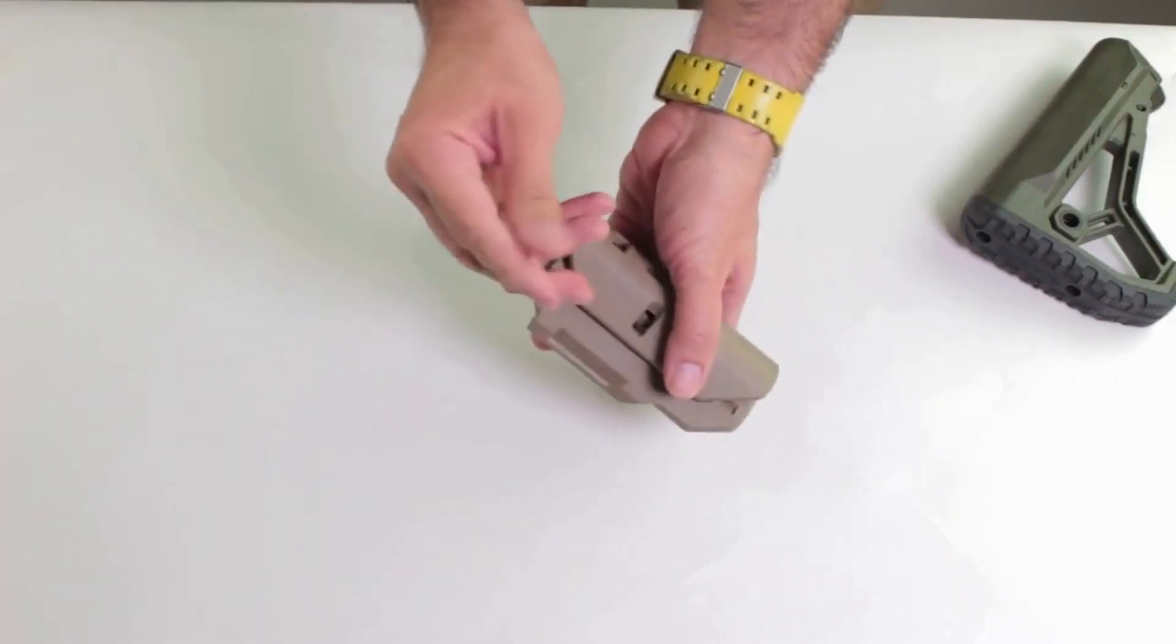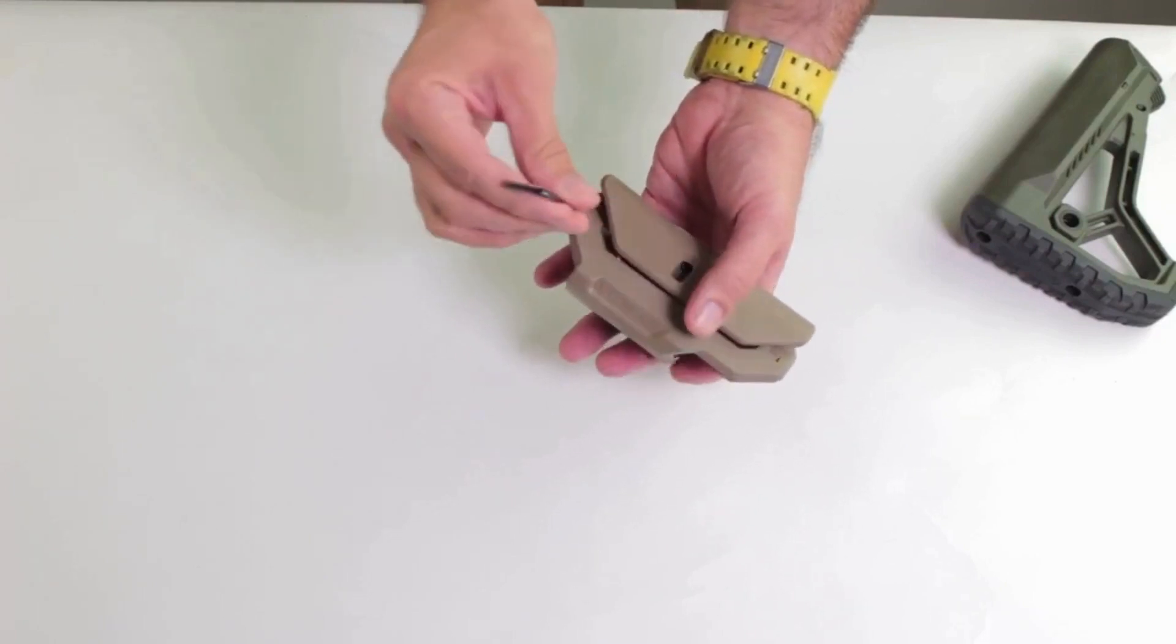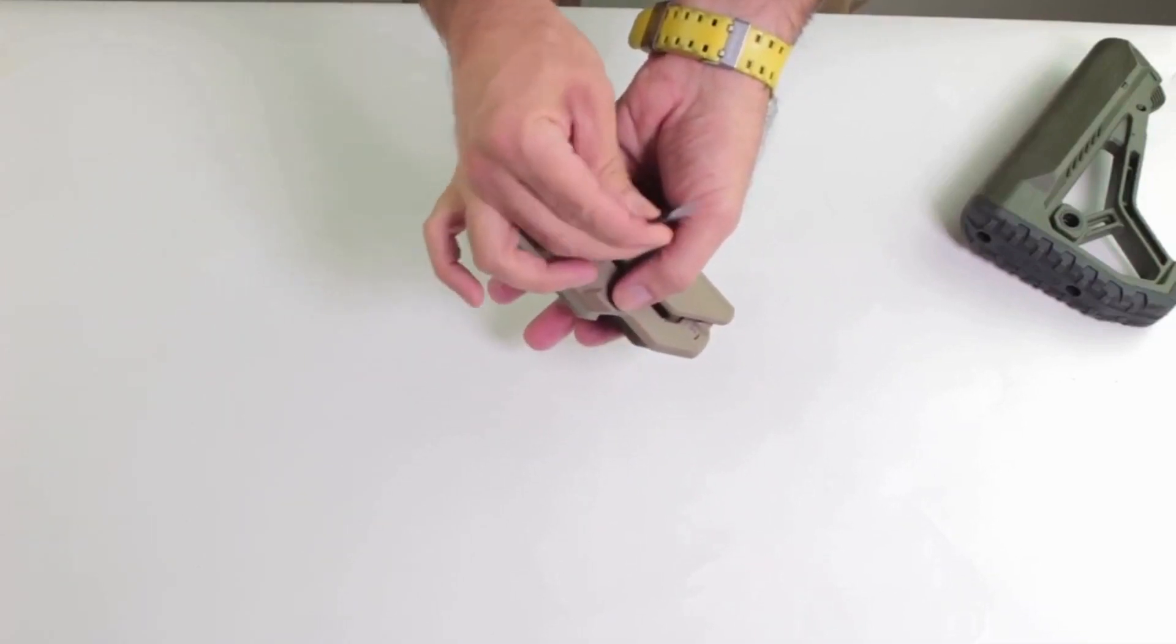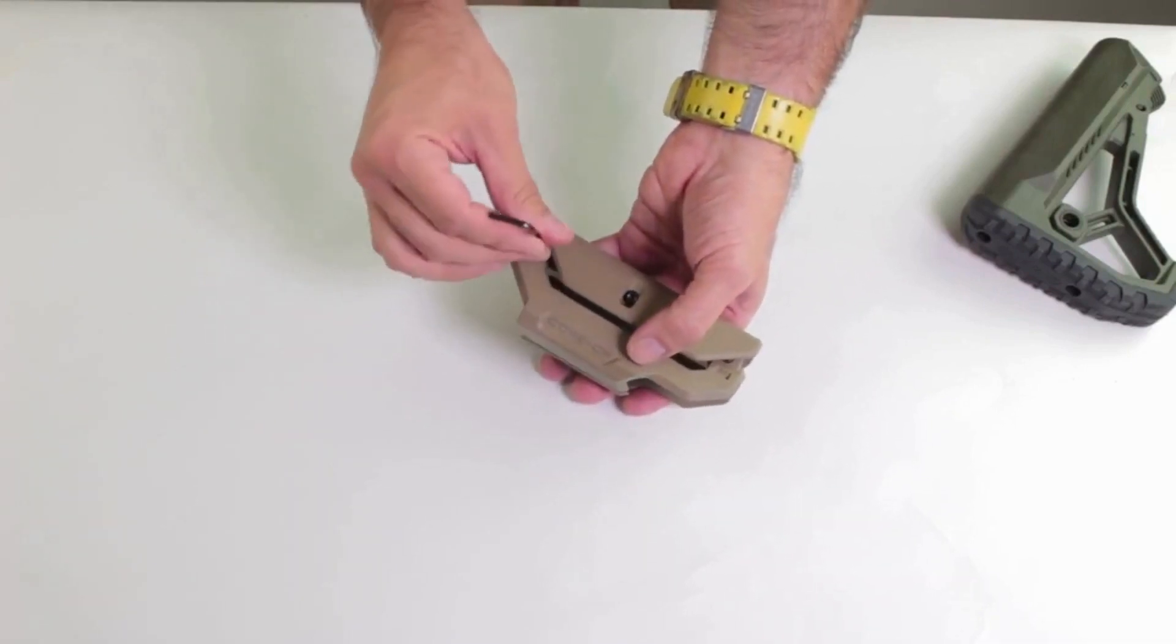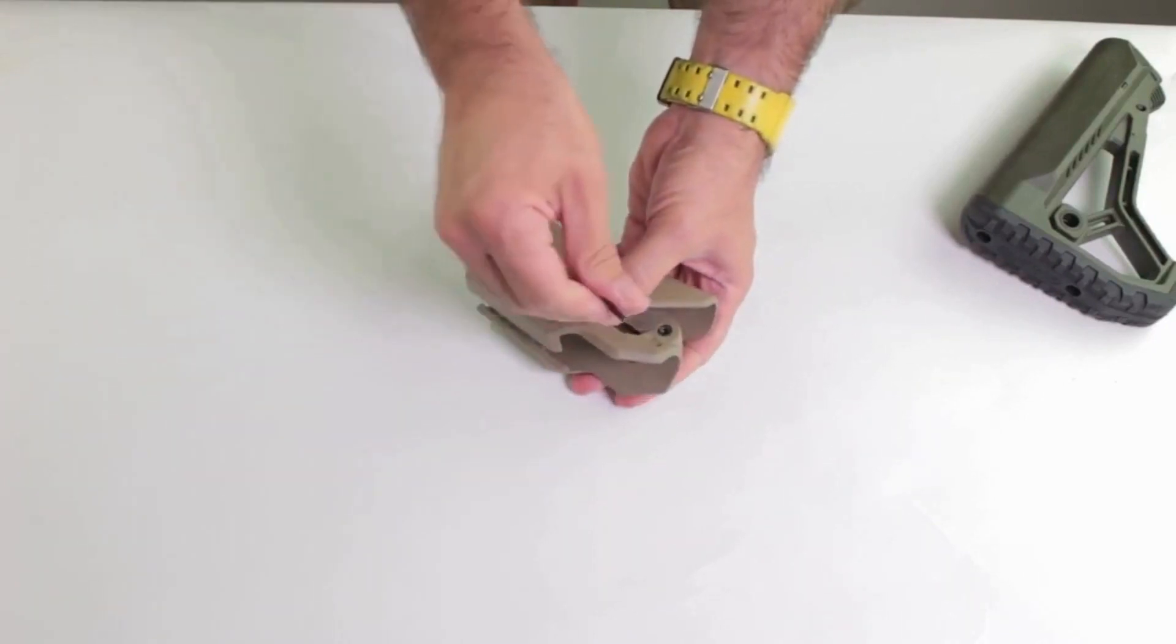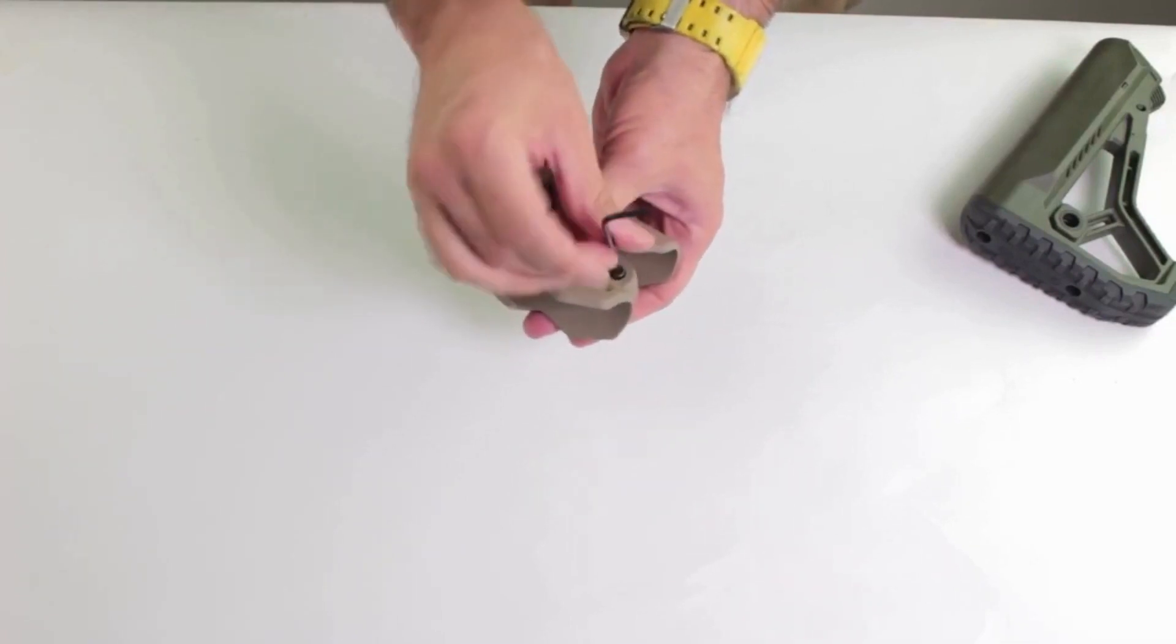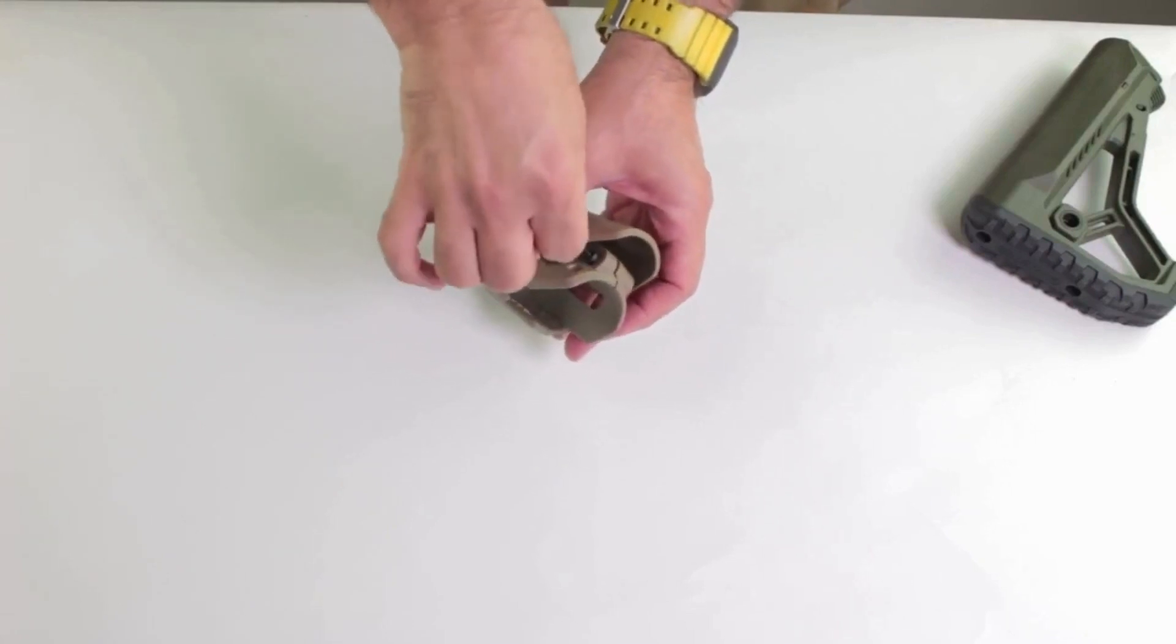Only going to use the provided Allen wrench. No need to use any power tools. Once this is loose I can pry this open. Go for the last one and I'm going to make sure that they're completely loose all the way.